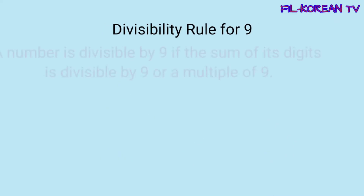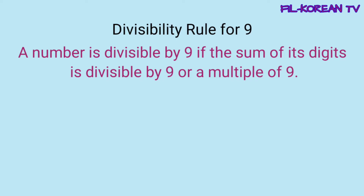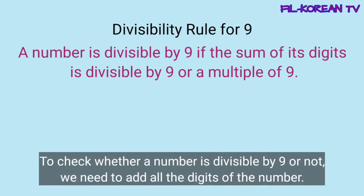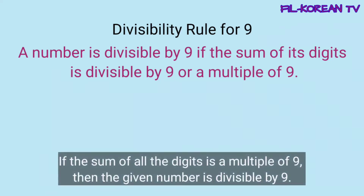Now, let's know the divisibility rule for 9. A number is divisible by 9 if the sum of its digits is divisible by 9 or a multiple of 9. Ang gagawin natin para malaman natin kung ang isang number ay divisible ng 9 o hindi, ay ipa-plus din natin yung lahat ng kanyang digits. At kapag ang sum or total ng lahat ng digits ay multiple ng 9 or divisible by 9, yung given number ay divisible din ng 9.